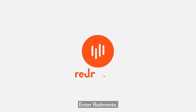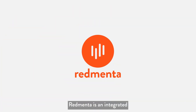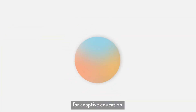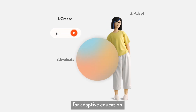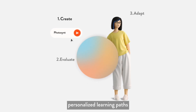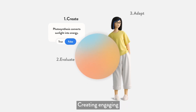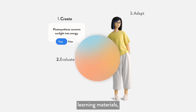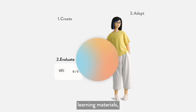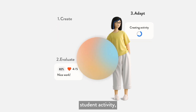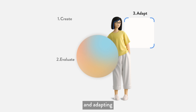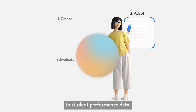Enter RedMenta. RedMenta is an integrated AI assistant for adaptive education. It helps you create personalized learning paths in three powerful steps: creating engaging learning materials, evaluating individual student activity, and adapting to student performance data.